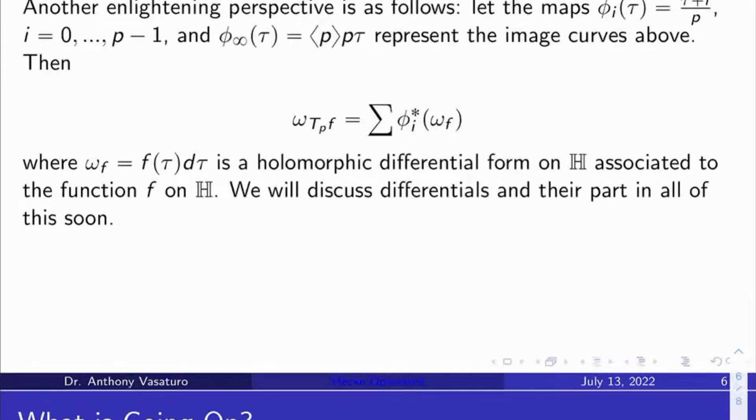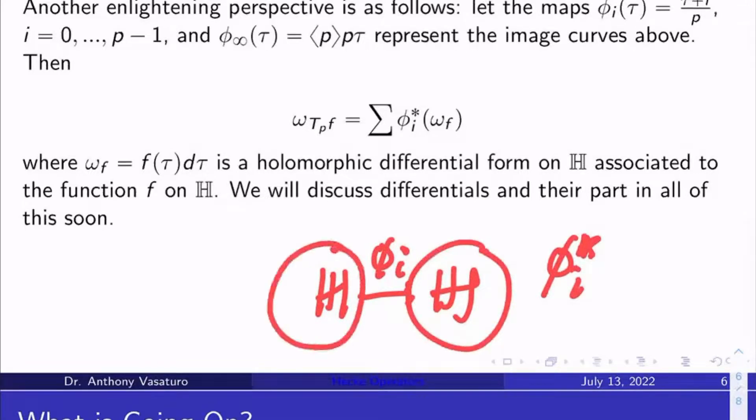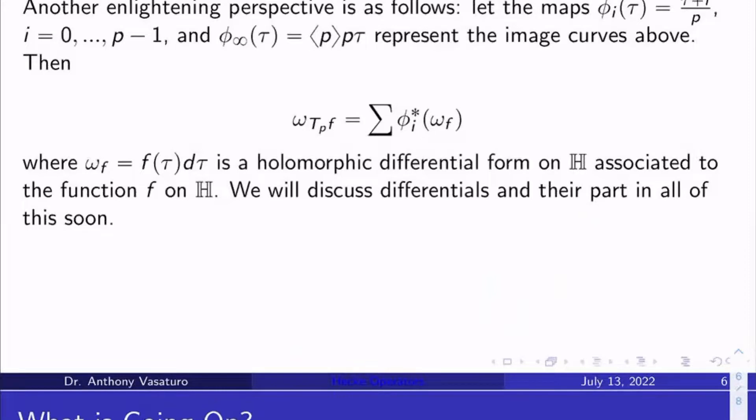Now, one way of thinking about the Hecke operators is as follows. What I can do is I can take f, and I can look at the differential associated to it. And I have a whole video on this coming up soon. But it's just the differential f of tau d tau. This is a holomorphic differential on H associated to the function f on H that we were handed. Now, I've got these maps phi sub i from H to H, that induces a map phi sub i star from differentials on this copy of H to differentials on this copy of H by pullback by composition with this map here. So I can take all the holomorphic differentials, or I can take the holomorphic differential omega_f, and I can pull it back under phi sub i to a holomorphic differential on this copy of H here.